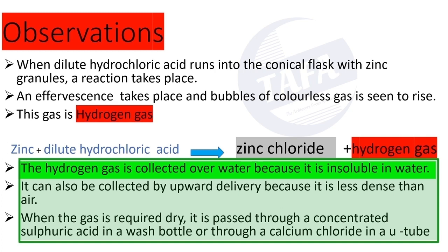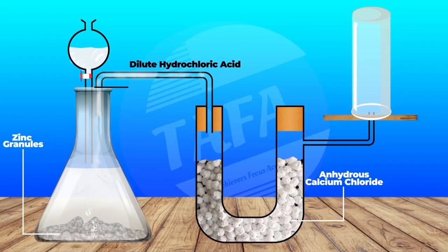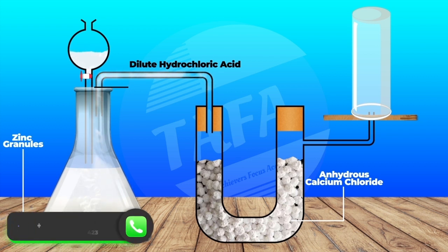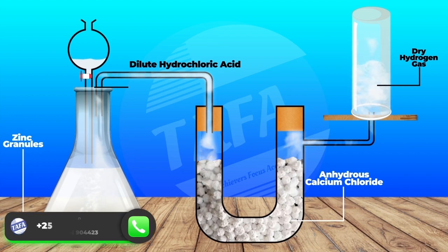be collected by upward delivery because it is less dense than air. Upward delivery means you can direct the delivery tube up and collect it in an inverted test tube. When the